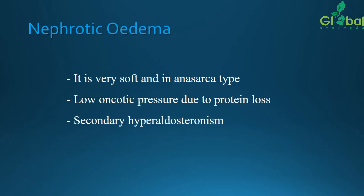Nephrotic edema is very soft and of the anasarca type — generalized. Low oncotic pressure due to protein loss: because more protein loss is happening, there will be low oncotic pressure. This will cause secondary hyperaldosteronism — an endocrinological disorder — due to increased secretion of aldosterone hormone with respect to the kidney.